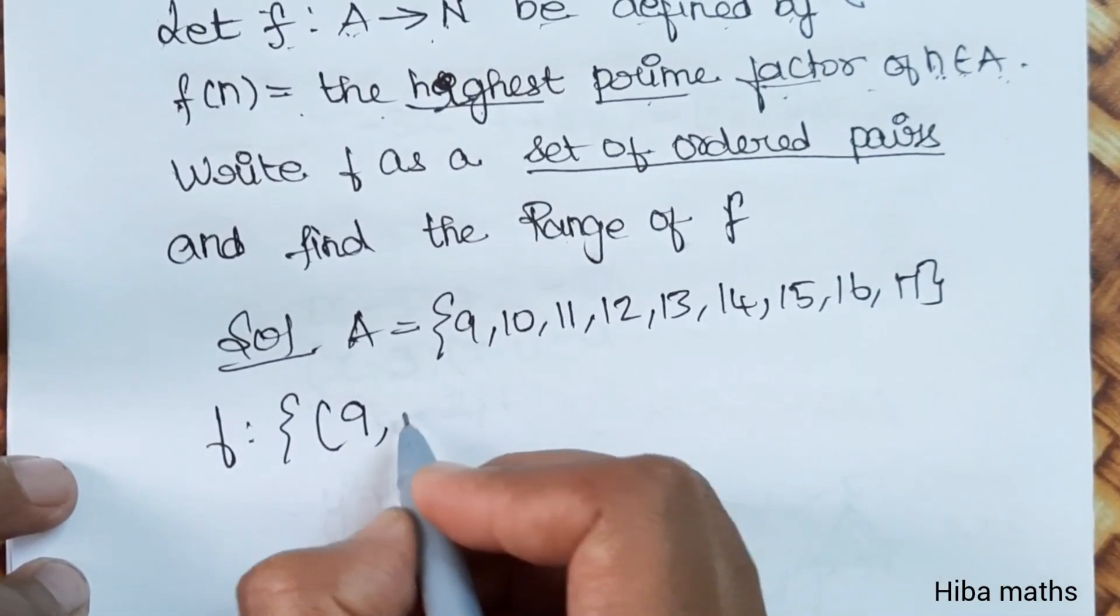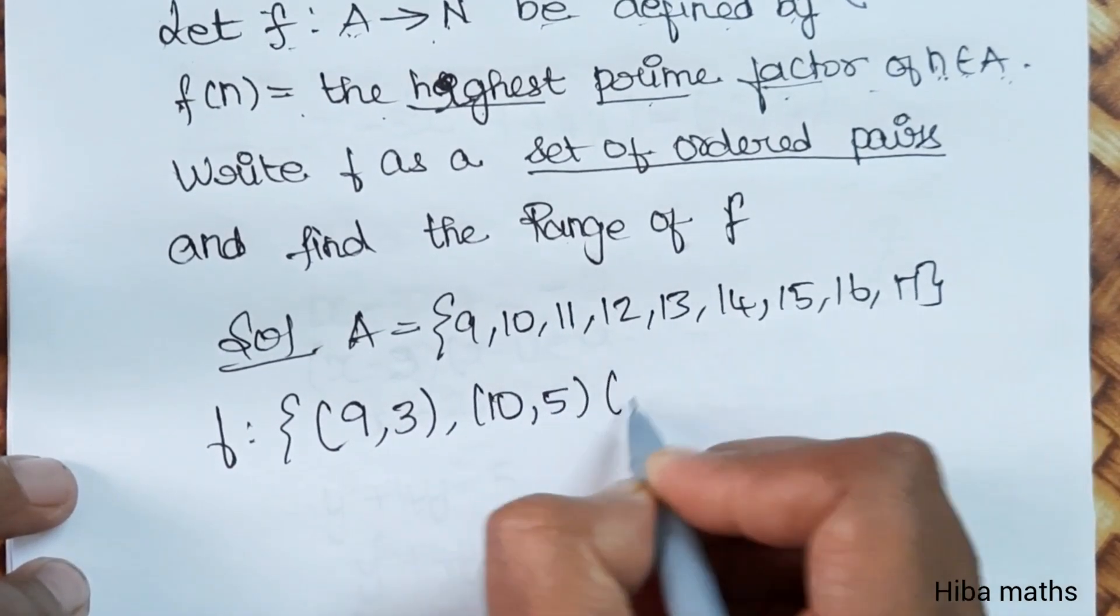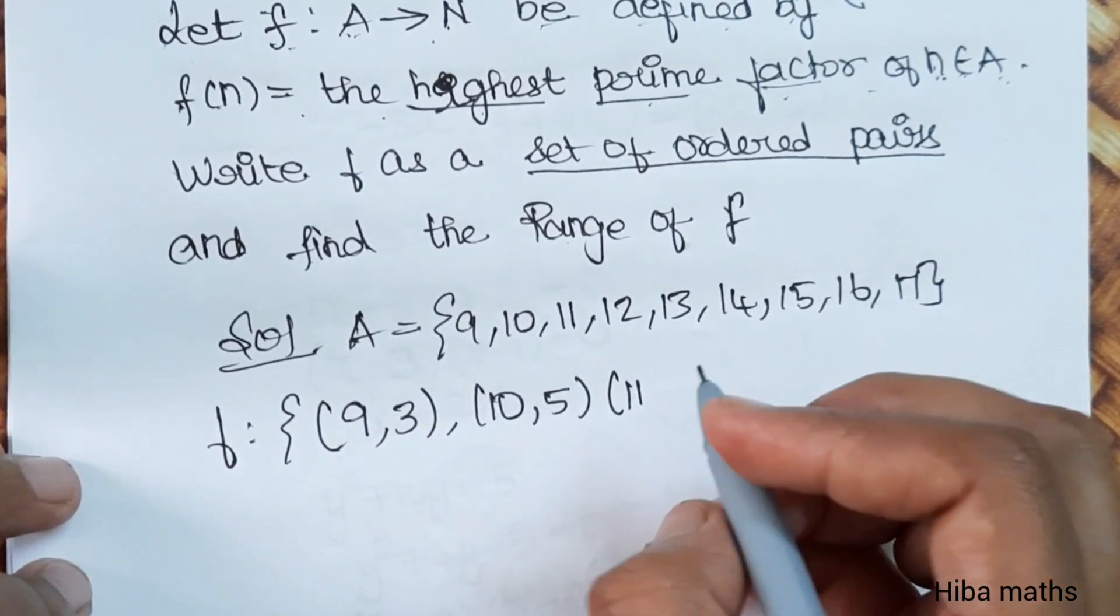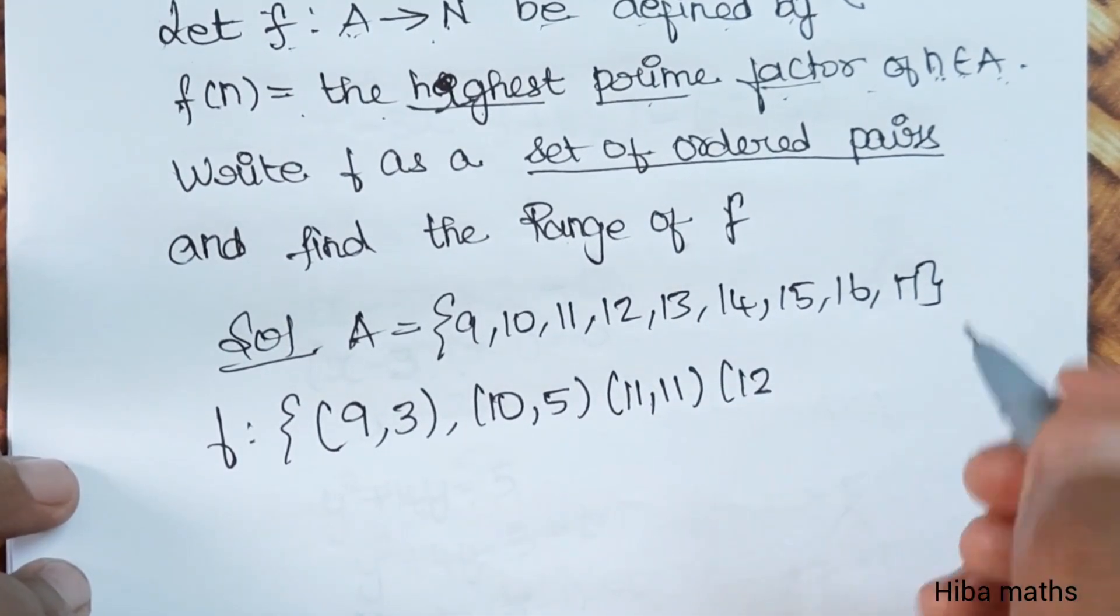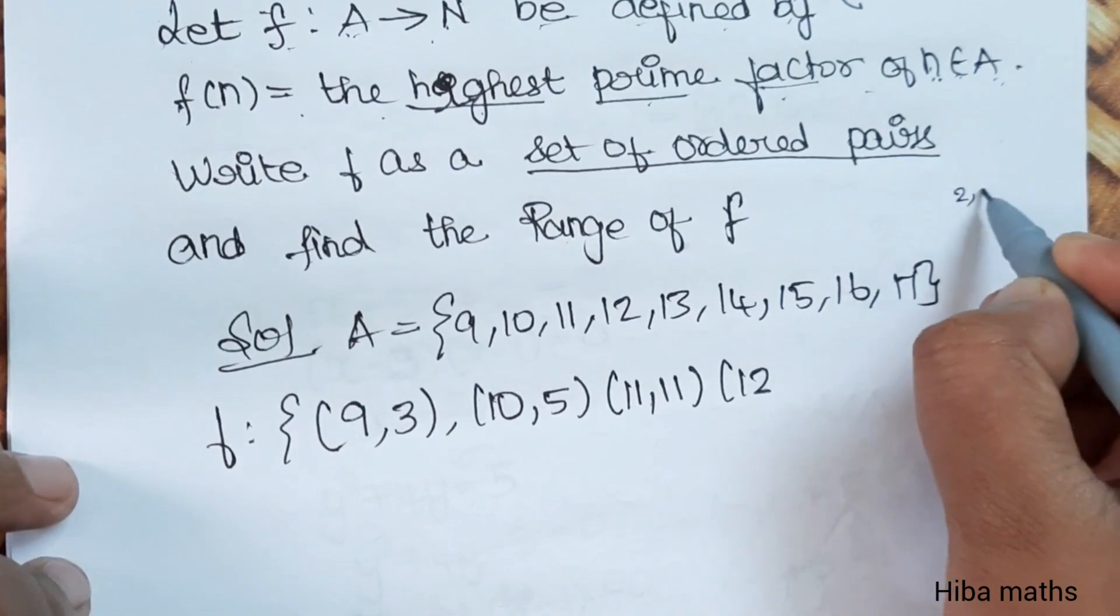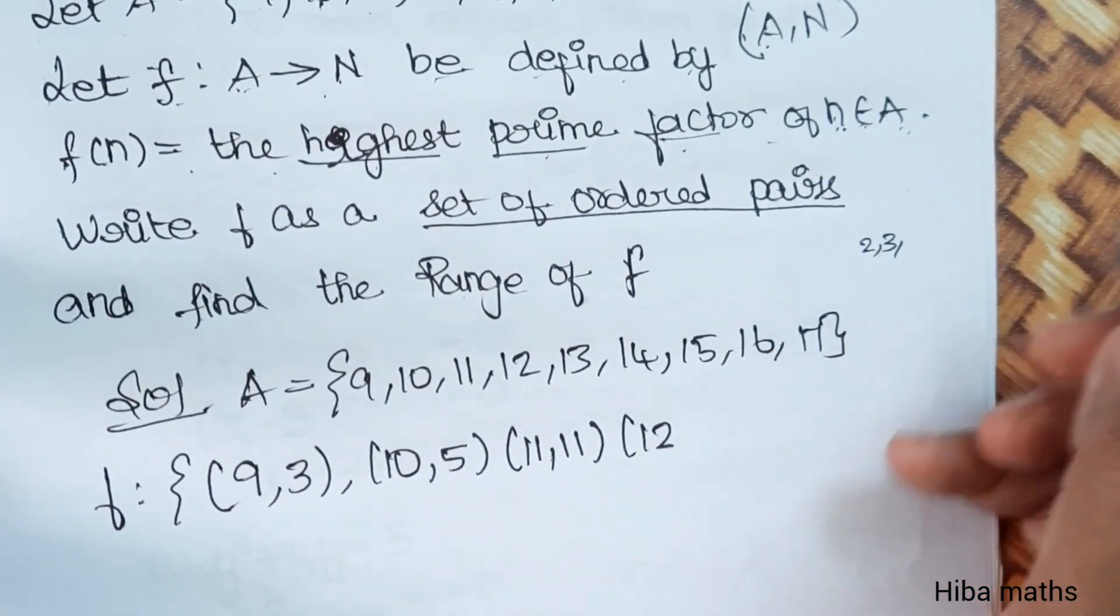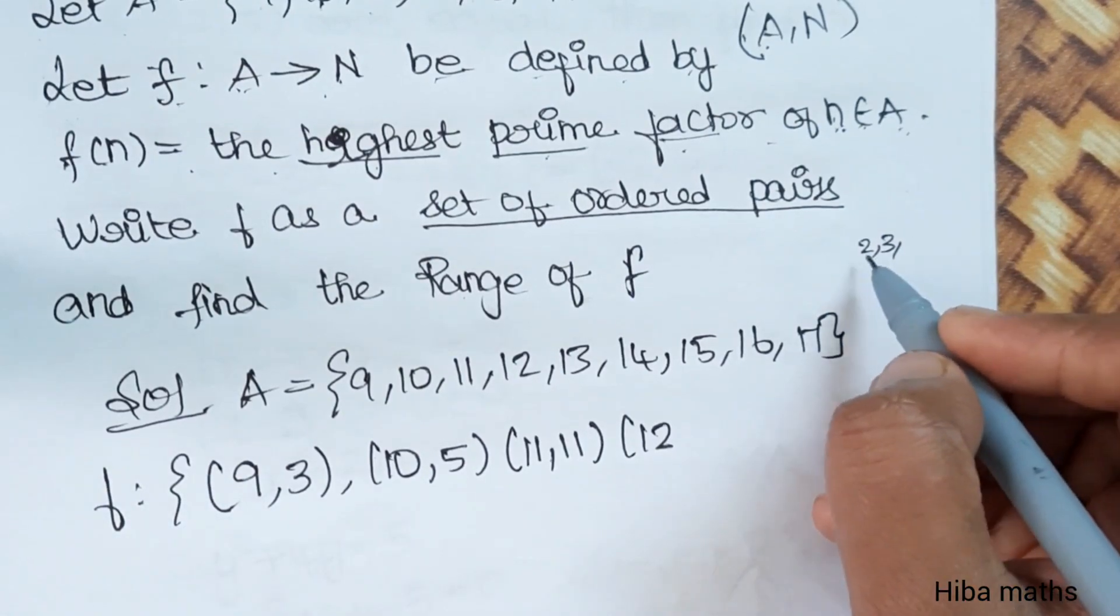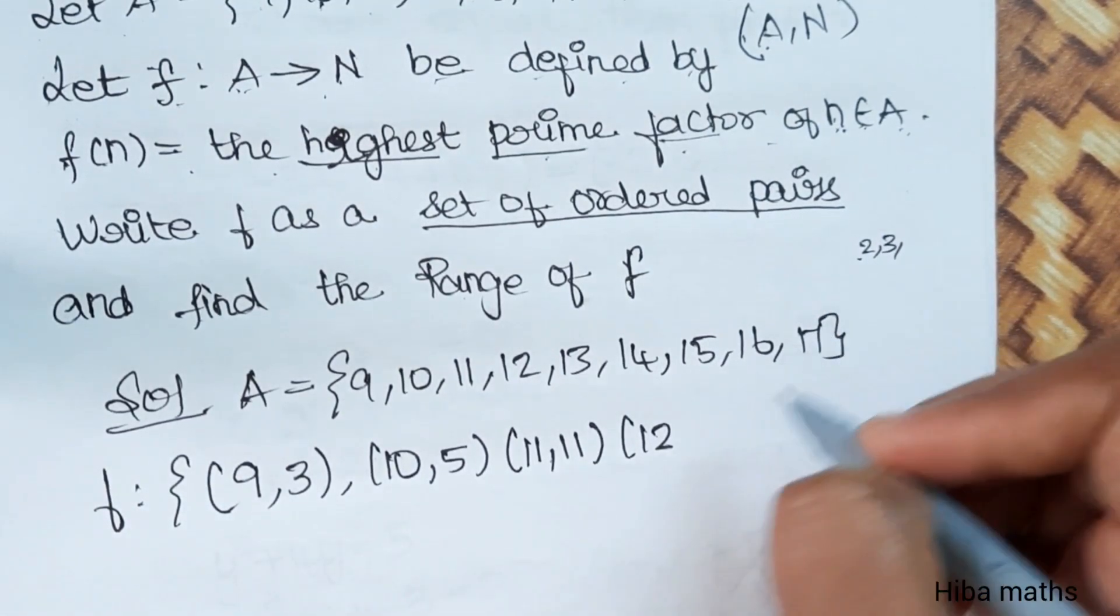9 is 3, 10 is 5, 11 is prime, so the prime factor of 11 is 11. For 12, we have 2 table and 3 table. 2 and 3, the highest is 3. So we have 12, 3.